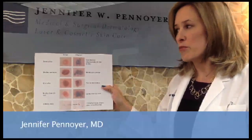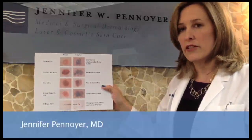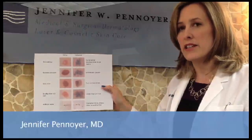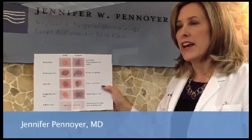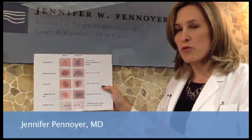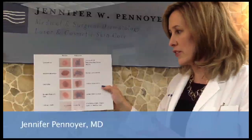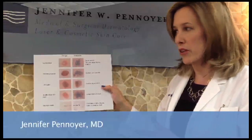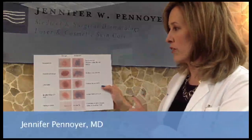The basic premise of cancer detection is the ABCDs. A is for asymmetry, B is for border, C is for color, D is for diameter. Let's go over that.